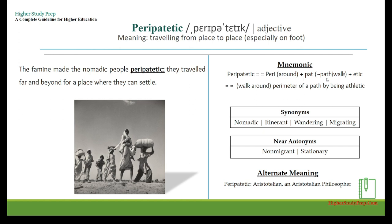So you can remember it as 'walk around the perimeter of a path by being athletic.' Synonyms: nomadic, itinerant, wandering, migrating. Near antonyms: non-migrant, stationary. Note there is an alternate meaning: peripatetic can also mean Aristotelian, or an Aristotelian philosopher.